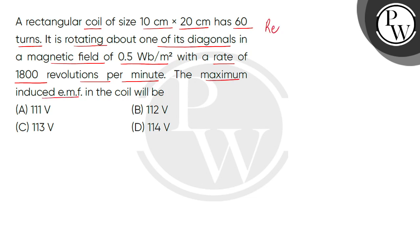So children, given we have a rectangular coil, its area, that is length multiplied by breadth, will be 200 cm². So we can write this as 200 × 10⁻⁴ m². It means 2 × 10⁻² m² will be area.